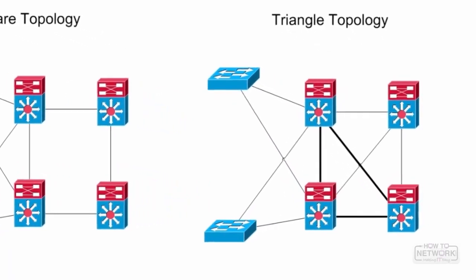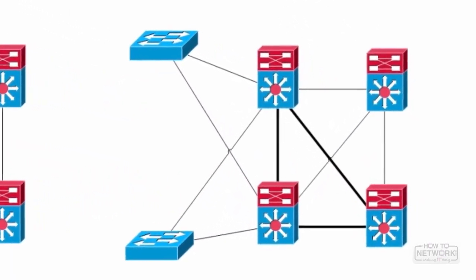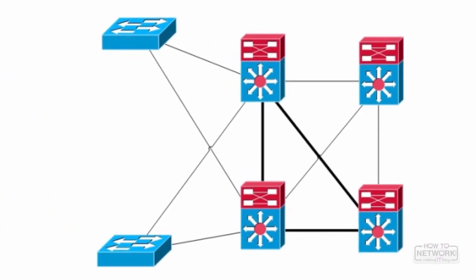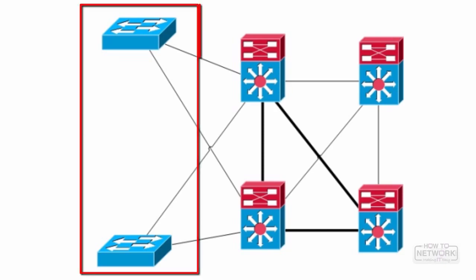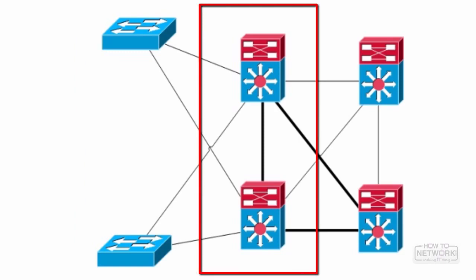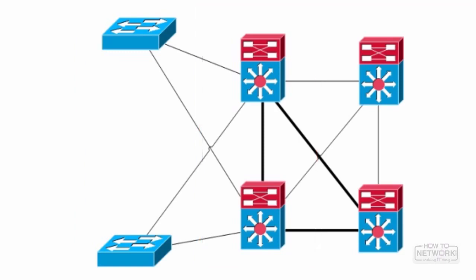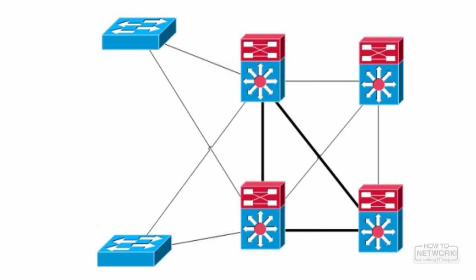Another critical aspect of convergence and high availability is having redundancy on behalf of the end user at the access layer to a first hop or default gateway. With Layer 2 switches at the access layer and Layer 3 switches at the distribution layer, the default gateway is usually the interface on the distribution layer switch that connects to the access layer. First hop redundancy protocols are only needed if operating at Layer 2 in the access layer and Layer 3 in the distribution layer.